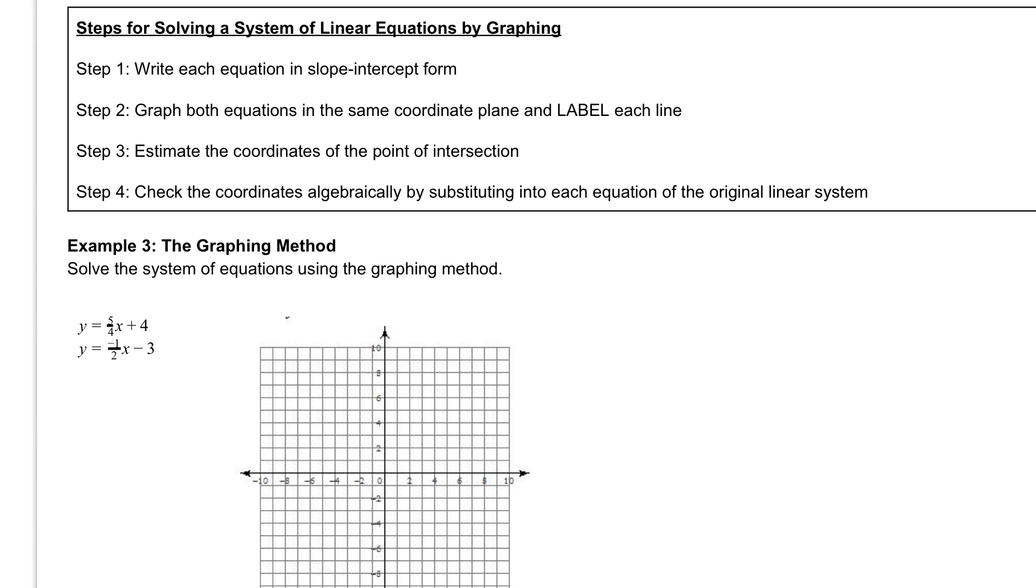Next we're going to graph the lines ourselves. In the box on top it says steps for solving a system of linear equations using the graphing method. Step 1, you're going to write each equation in slope intercept form. If you don't remember, slope intercept form is y equals mx plus b. Remember that m is our slope and b is our y intercept.